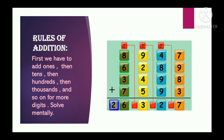We should solve mentally. Here you can see in this example: first we have added the ones digits 7, 9, 8 and 3. After adding we get 27, so we write 7 and give the tens digit as carry to the next place.